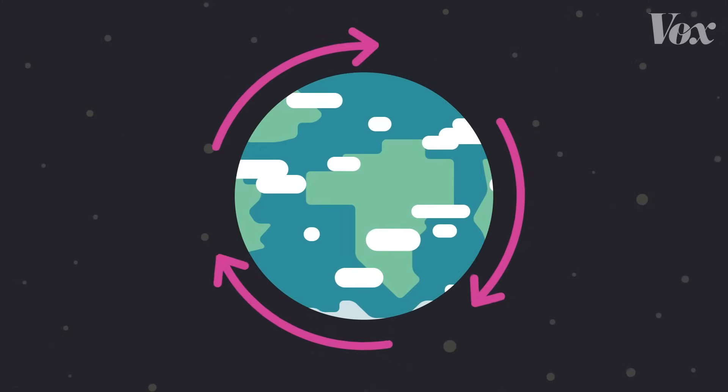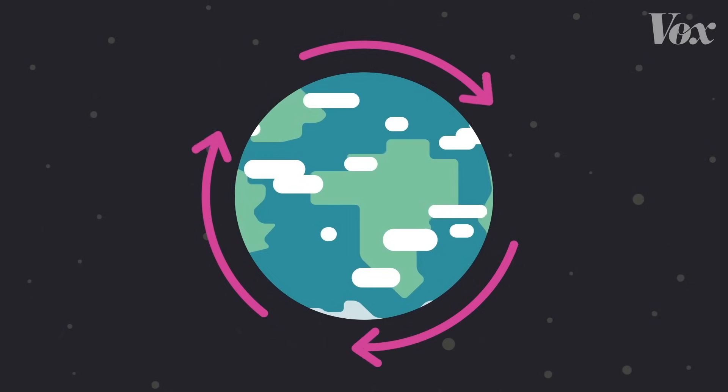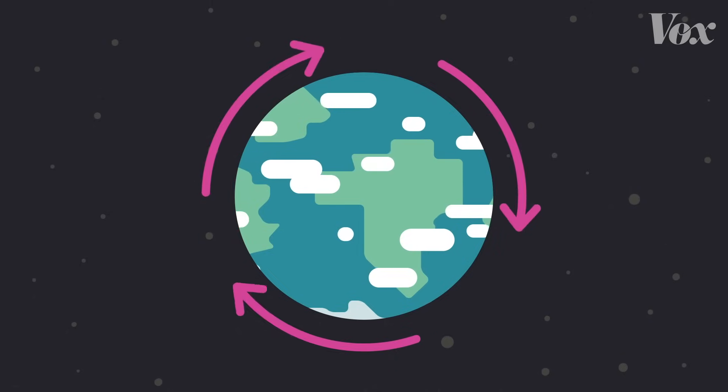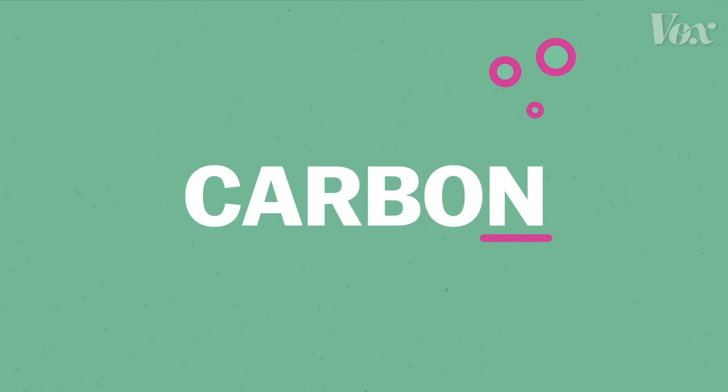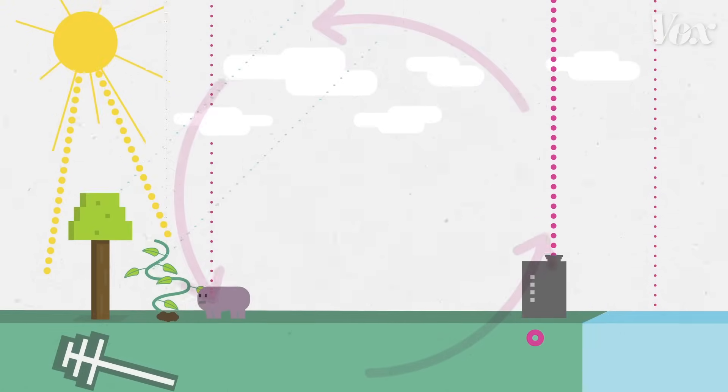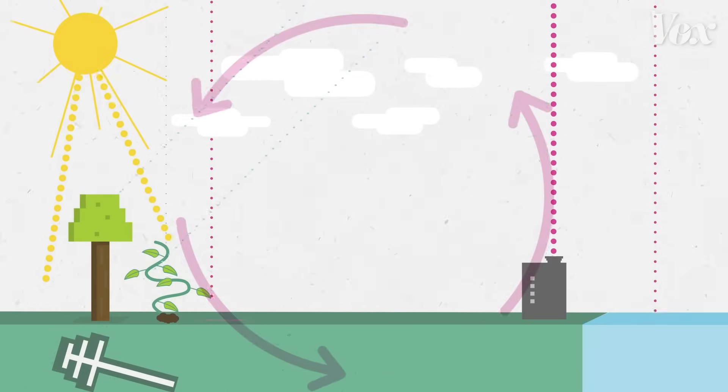The Earth has an elegant cycle of life. It's the story of carbon. And over billions of years, it has evolved to look something like this.